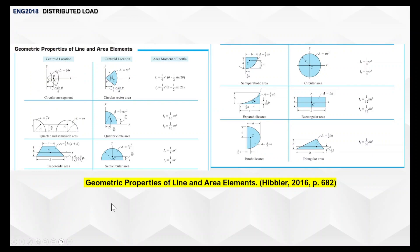For reference, these are the geometric properties of line and area elements found at the back of your textbook. You don't need to memorize all of them — just the basic shapes: triangular, rectangular, and circular areas. You'll be using these in your third year as well.